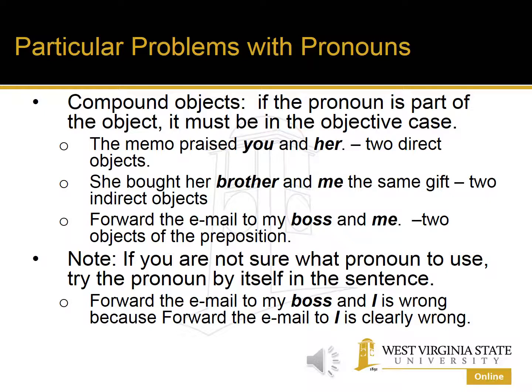You hear this a lot. I think the reason is that people think using the nominative case makes the sentence sound more sophisticated, but it's a blatant error. We already learned about the objective case. So if we understand the sentence, 'The memo praised you and her' — both 'you' and 'her' are direct objects. Therefore, we need the objective case, which is 'her,' not 'she.'